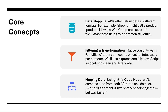Here are a few core concepts we will use. First, data mapping: APIs often return data in different formats — for example, Shopify might call a field 'order ID' while WooCommerce uses 'ID column'. We will map these fields to a common structure. Second, filtering and transformation: we will use JavaScript expressions to clean and filter data — for example, only unfulfilled orders or calculating total sales. Third, merging data: using n8n's code node we will combine data from both APIs into one single dataset.